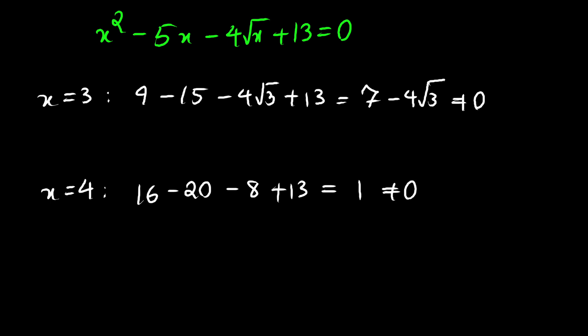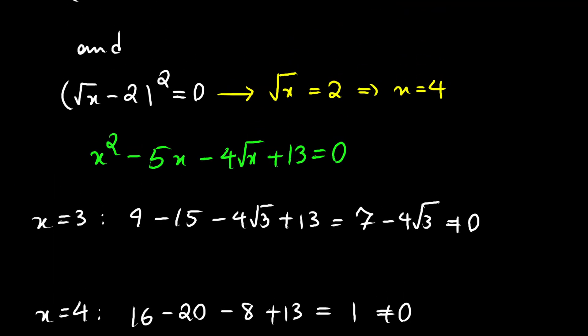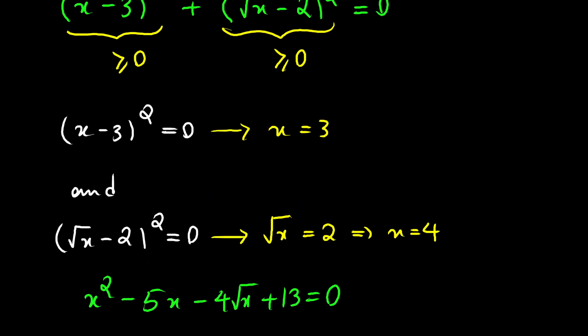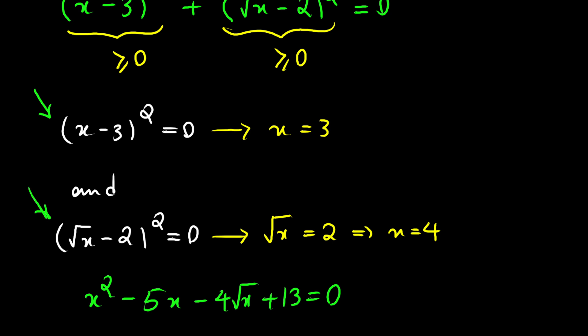So there is no solution. The reason is that we don't have two separate scenarios — we only have one scenario in which both equations must hold simultaneously. That means x must equal 3 and at the same time equal 4, which is impossible. Therefore, there is no x that satisfies our equation, and the number of solutions is 0.